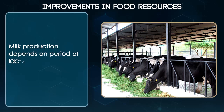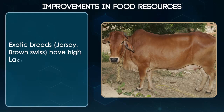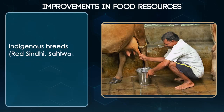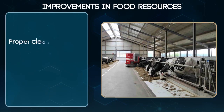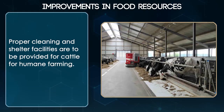Milk production depends on the period of lactation. Exotic breeds have a high lactation period, while indigenous breeds are resistant to diseases. Proper cleaning and shelter facilities are to be provided for the cattle for humane farming.